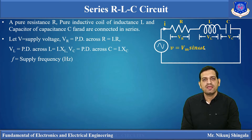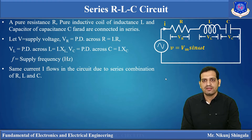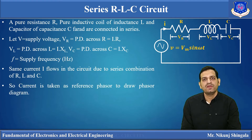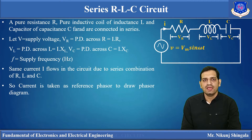Here ω = 2πf where f is the supply frequency. Now all three elements are connected in series, so the same current flows through all of them. Whenever we draw the phasor diagram we need to take some reference quantity. Here we have four quantities: I, Vr, Vl, and Vc. Current will be taken as the reference phasor because it is common through all three elements.